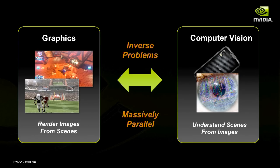That rendering can be of increasing complexity and realism throughout the last couple of decades. Computer vision is the opposite problem — you have an image, it could be one image or multiple views of the same scene, and you want to understand what is there. I like to distinguish it from image processing, which is more about modifying the appearance of an image — color enhancement, sharpening, contrast adjustment, noise reduction. What I'm really talking about is trying to understand what's in the scene.